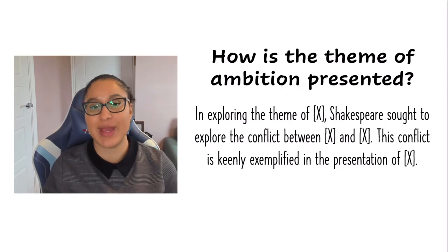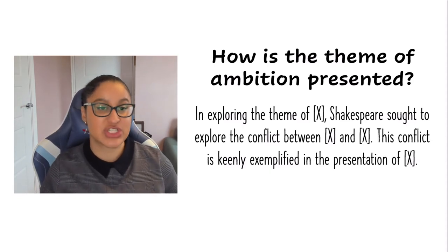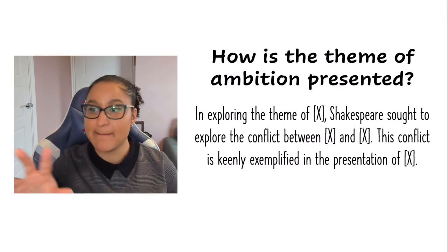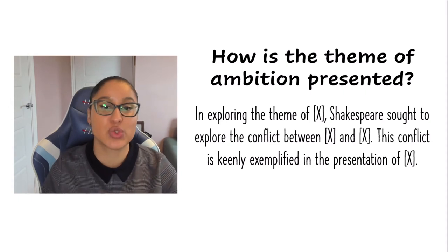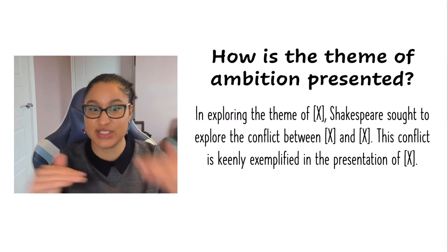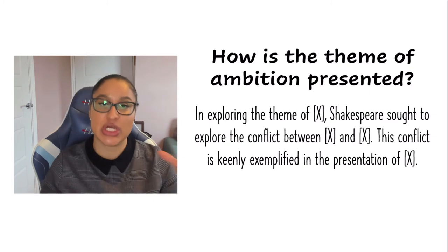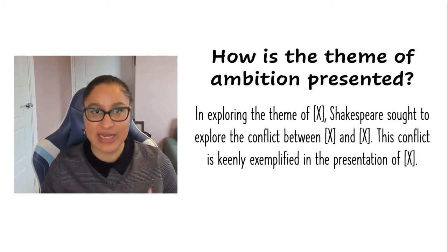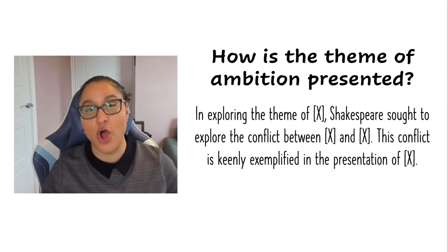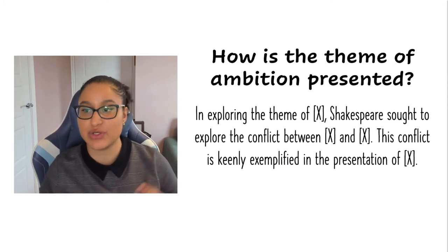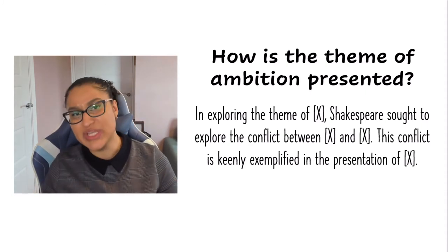When exploring the theme of kingship, you can look at King Duncan and Malcolm for good kingship and contrast that with tyrannical Macbeth to explore what Shakespeare is trying to say on that theme. Here I've got a model introduction for theme questions where you plug in the gaps. It starts: 'In exploring the theme of X, Shakespeare sought to explore the conflict between X and X' — that's where your versus goes in. You then finish with: 'this conflict is keenly exemplified in the presentation of' — and that's where you put your characters. It's nice and short; in the exam you just want to establish what you're going to talk about.